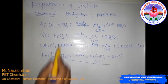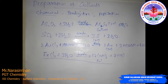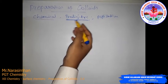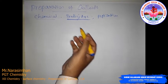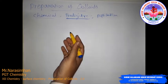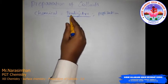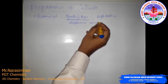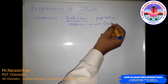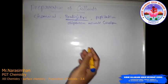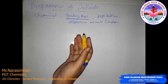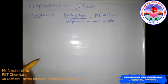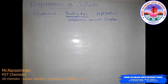Next is the Bredig's Arc method, or electrical disintegration method. This process involves both dispersion and condensation. Colloidal metals like silver, platinum, and gold can be prepared using the Bredig's Arc method.